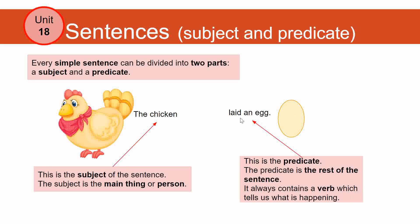The verb is 'laid' — that is the action word. The noun in the predicate is 'egg.' The chicken is the first noun and that's the subject, and the second noun is the egg — that's not the subject. The subject is usually a noun or a proper noun if it's a name. 'An' is the article. 'The,' 'an,' and 'a' are the three articles — they always appear before nouns.